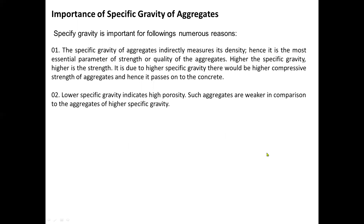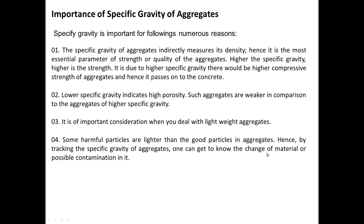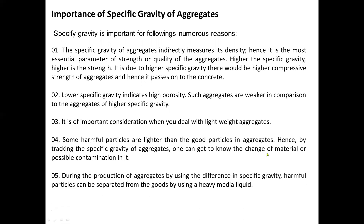Number 2: lower specific gravity indicates high porosity. Such aggregates are weaker in comparison to aggregates of higher specific gravity. It is of important consideration when dealing with lightweight aggregates. Some harmful particles are lighter than good particles in aggregates. Hence, by tracking the specific gravity of aggregates, one can get to know the change of material or possible contamination in it. During the production of aggregates, by using the difference in specific gravity, harmful particles can be separated from the good ones by using heavy media liquid.